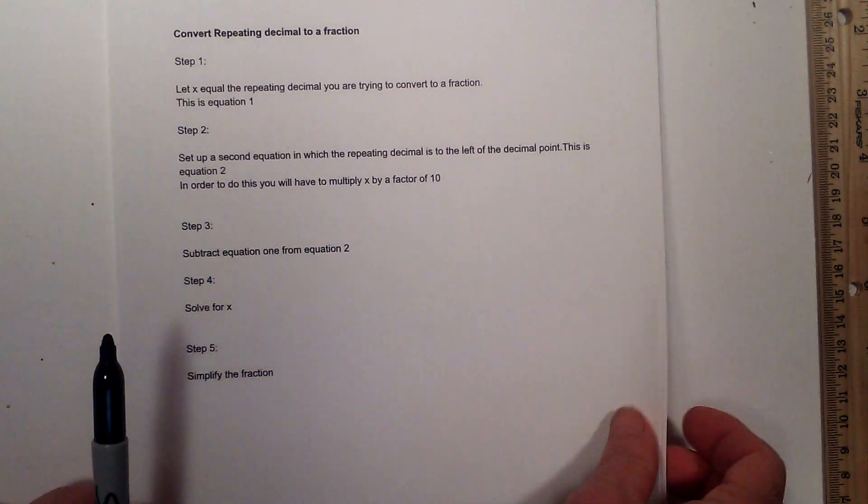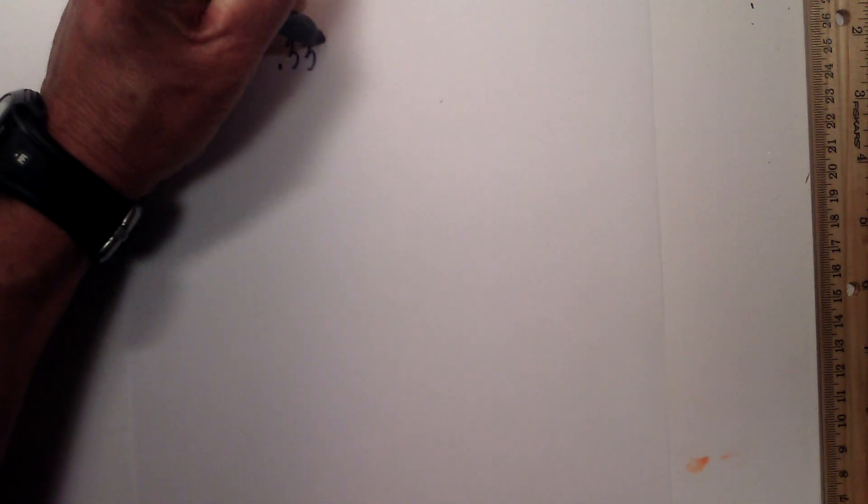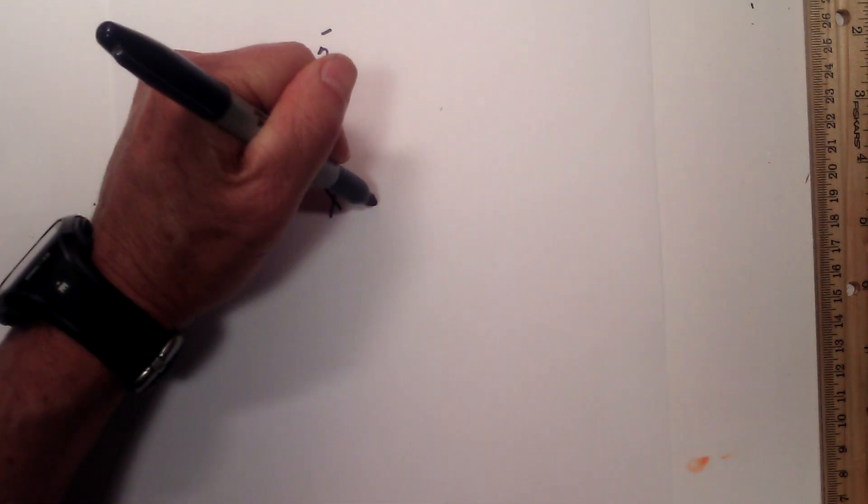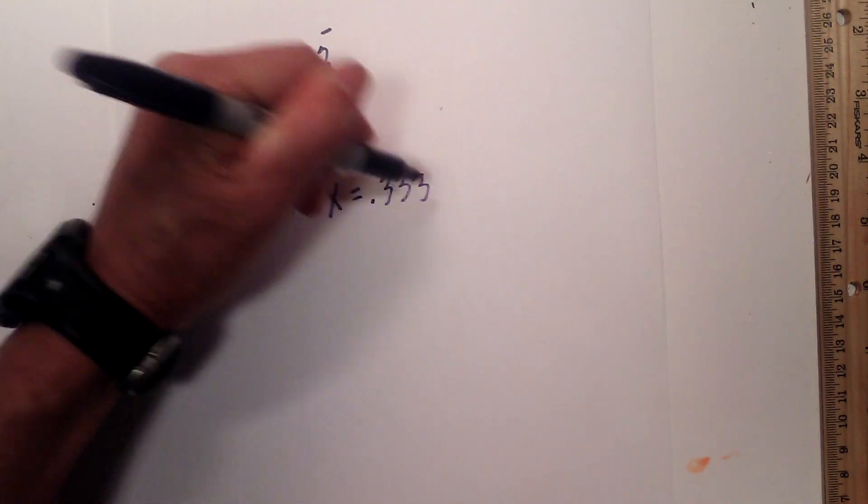Let's work through a couple examples. I'll start with some that are fairly easy and then we will get more difficult. First, let's try this 0.333 repeating. Let's remember the steps. Step 1, just set x to the repeating decimal. Step 1 is pretty easy.